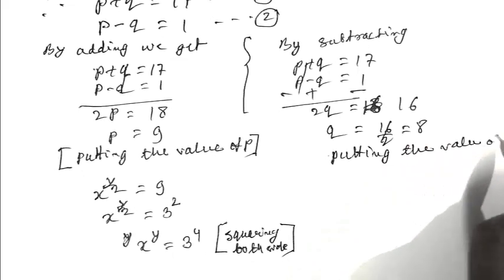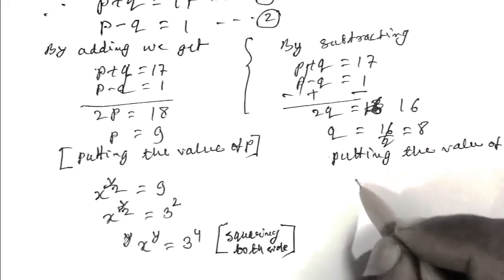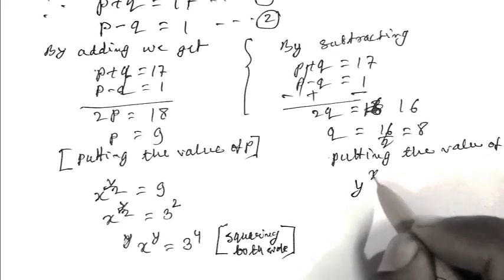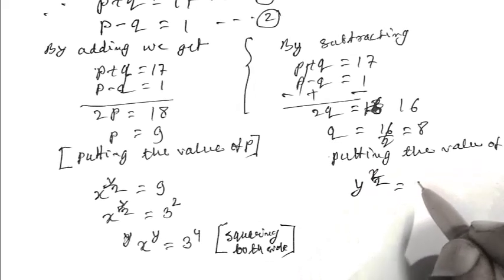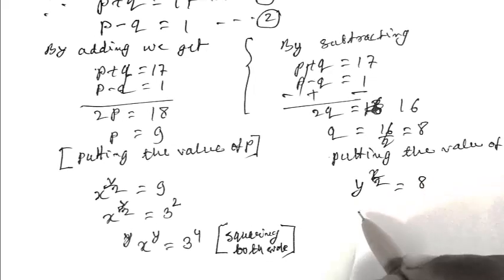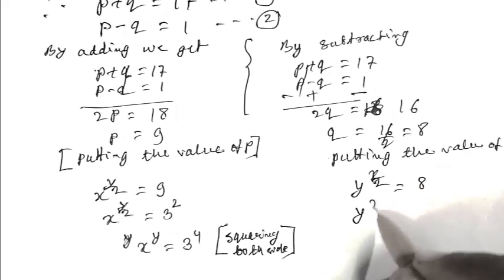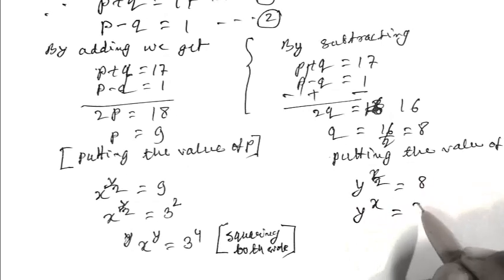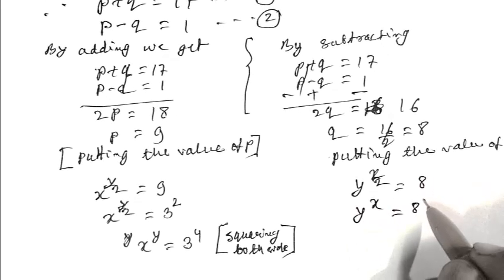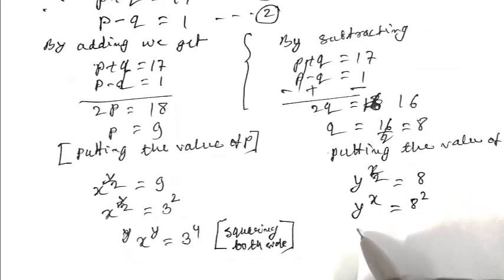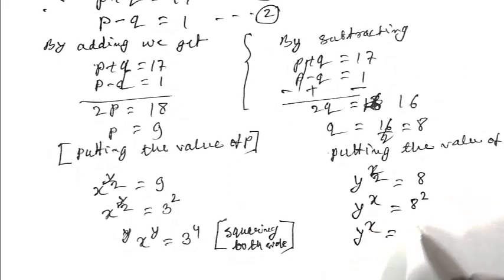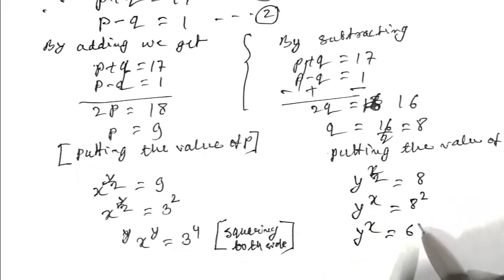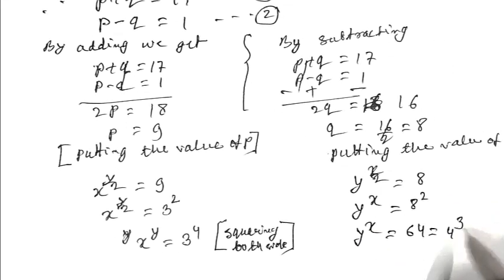Putting in the value of q: y to the power x upon 2 equals 8, so y to the power x equals 8 squared equals 64, that is 4 cubed.